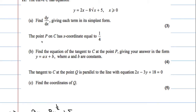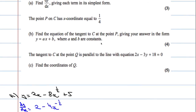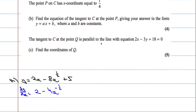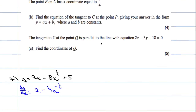That's a handy three marks. Next part: the point P on C has x coordinate equal to 1 quarter. Find the equation of the tangent to C at the point P, giving your answer in the form y equals ax plus b where a and b are constants. So I need to find the y coordinate.